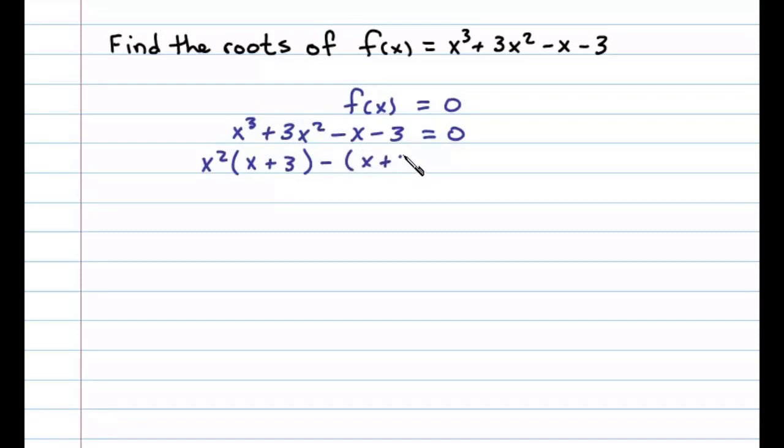And that'll leave us with (x + 3) = 0. Now (x + 3) is the GCF, so we'll factor that out, and then what's left in this case will be x² - 1.